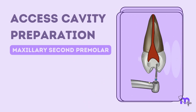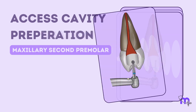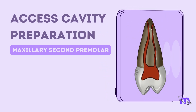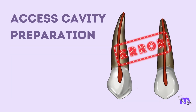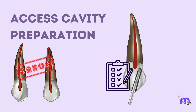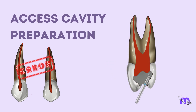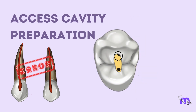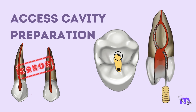While the access cavity preparation is the same as the first premolar, a rare anomaly like the presence of three root canals may be seen. The errors that could occur in ACP of maxillary premolars include perforations due to inadequate evaluation of the direction of the tooth, variations in the placement of the canal orifices, and changes in the shape and number of the canals. If dentinal shoulders are not removed adequately, canals may be missed and instrument separations may occur.